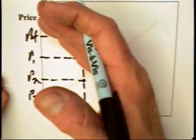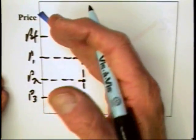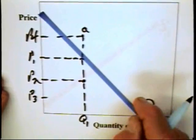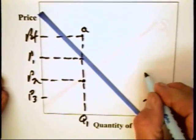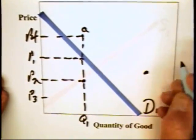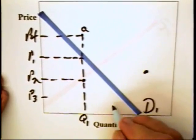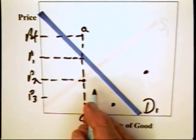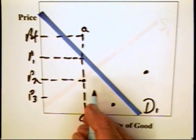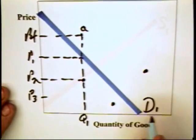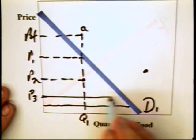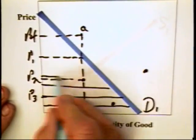So again, the demand curve is really a boundary between what is acceptable and what is unacceptable to consumers. If consumers are unwilling to accept this price quantity combination, they're willing to accept this one. Put it another way, they're willing to accept any quantity underneath the demand curve, or they're willing to accept any combination in this area here.